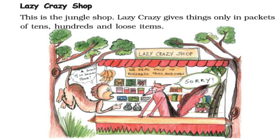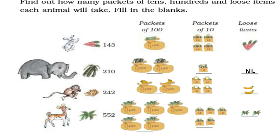The lazy jungle shop gives things only in packets of tens, hundreds, and loose items. In 143: 1 packet of tens, 4 packets of tens, 3 loose items. In 210: 2 packets of 100, 1 packet of 10, 0 loose items. In 252: 4 packets of 10 and 2 loose items. In 552: 5 packets of 100, 5 packets of 10, and 2 loose items.